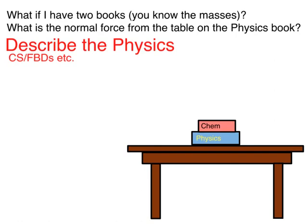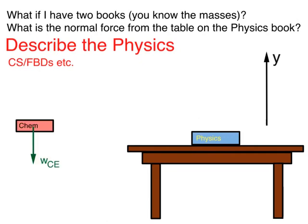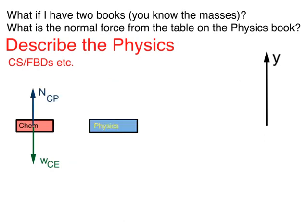Now let's move to the second step of our problem-solving framework: describe the physics. The first thing to do is determine coordinate systems and free body diagrams. For a coordinate system, let's label the vertical direction y, with positive y going up, since most of our forces are in the vertical direction. Now let's draw the free body diagram for the chemistry book. The chemistry book has mass, so it experiences a force of gravity down — its weight, between the chemistry book and the Earth. Since the acceleration of the chemistry book is zero, the sum of forces must be zero. Thus there must be some force pushing up on the chemistry book in opposition to its weight. This force arises due to the contact between the chemistry book and the physics book, so we call it the normal force between the chemistry book and the physics book.